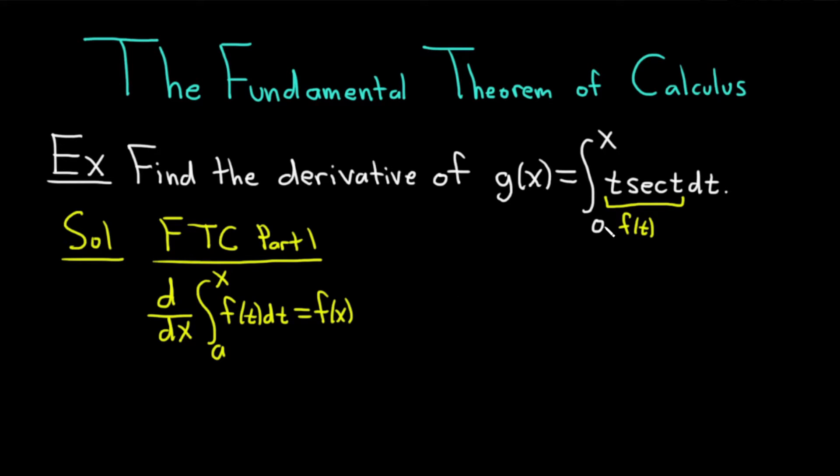And then our a is 0 and our x is x. So g'(x) is going to be equal to... if f(t) is t secant t, if you look at the formula, all you do is plug in x. You just take this x and put it where the t's are. It's super easy. So it's x secant x. That's the answer.